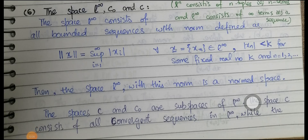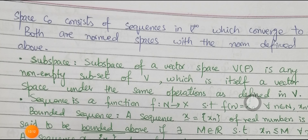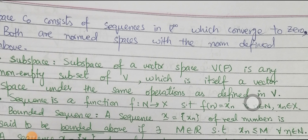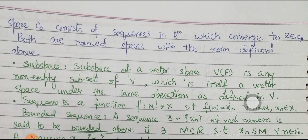Example 6: The space l∞ consists of all bounded sequences with norm ‖x‖ = sup_{i=1}^∞ |xᵢ|. The space l∞ with this norm is a normed space. The space c and c₀ are subspaces of l∞. The space c consists of all convergent sequences in l∞, and with the defined norm it is a normed space. The space c₀ consists of sequences in l∞ converging to zero, and it is also a normed space.